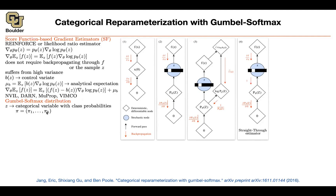You're going to write a distribution on those k options. We have been doing this when we're doing next word prediction type of tasks, where you are sampling or writing a probability on the next word. And k, in that case, was the size of your vocabulary. So that's going to give you a categorical variable. If you want to represent these z's using vectors, they are going to end up on corners of a simplex.